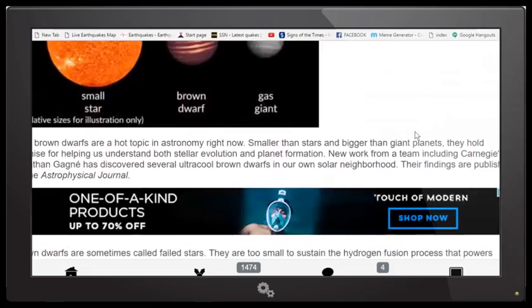The article starts off by saying, cool brown dwarfs are a hot topic in astronomy right now. Smaller than stars and bigger than giant planets, they hold promise for helping us understand both stellar evolution and planet formation. New work from a team, including Carnegie's Jonathan Gagney, has discovered several ultra cool brown dwarfs in our own solar neighborhood.